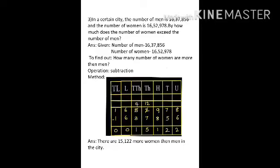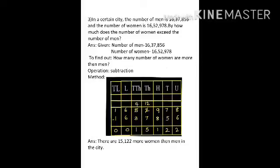In the units column, 8 minus 6 is 2. In the 10s, 7 minus 5 is 2. In the 100s, 9 minus 8 is 1. In the 1,000s, 2 minus 7 is not possible because 2 is smaller than 7, so we borrow 1 from the 10,000s place — 2 becomes 12, and 12 minus 7 is 5. The 10,000s place gave 1, so 5 becomes 4, and 4 minus 3 is 1. In the lakhs, 6 minus 6 is 0, and 1 minus 1 is 0. So the answer is there are 15,122 more women than men.